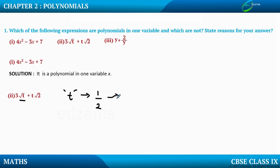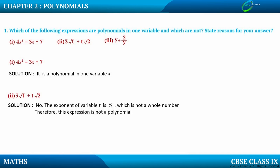Is 1/2 a whole number? No, 1/2 is not a whole number. Whole numbers start from 0, 1, 2, 3 and so on; 1/2 is a fraction. Therefore, this expression is not a polynomial. It is an algebraic expression in one variable, but we cannot call it a polynomial in one variable. The exponent of the variable t is 1/2, which is not a whole number. Remember: exponent, index, and power are all the same thing.